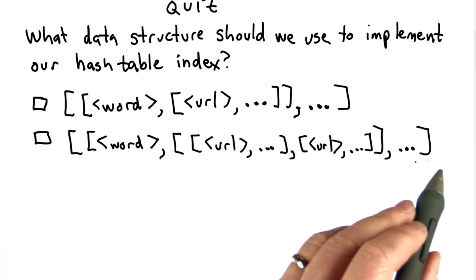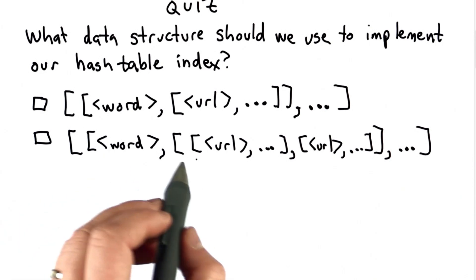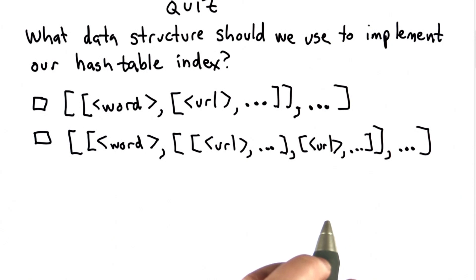The second choice is a list where each element in the list is a list itself, where the first element is a word, and the second element is a list of lists, where each element in that list is a list of URLs.